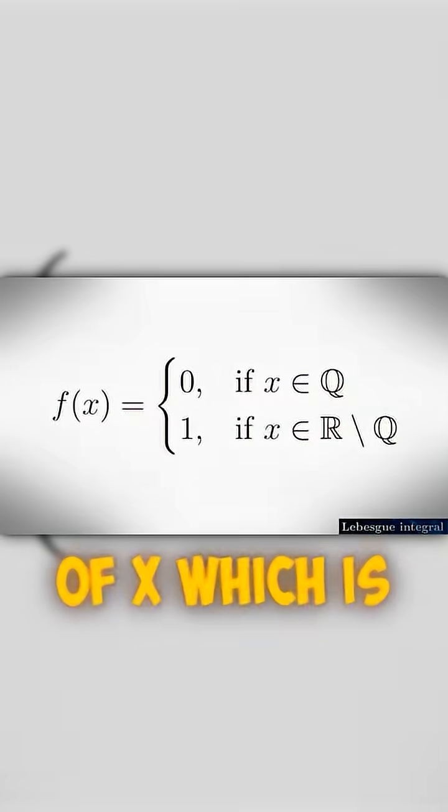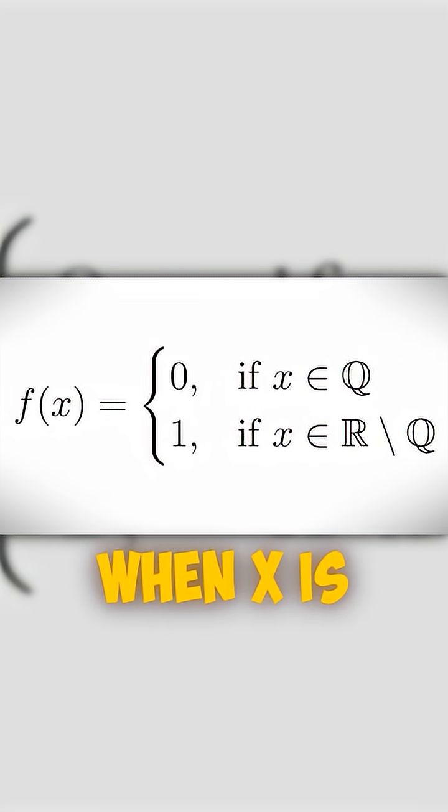Take for example the function f(x) which is zero when x is rational and one when x is irrational.